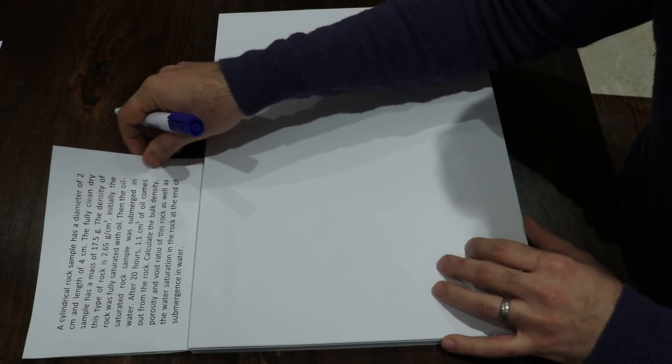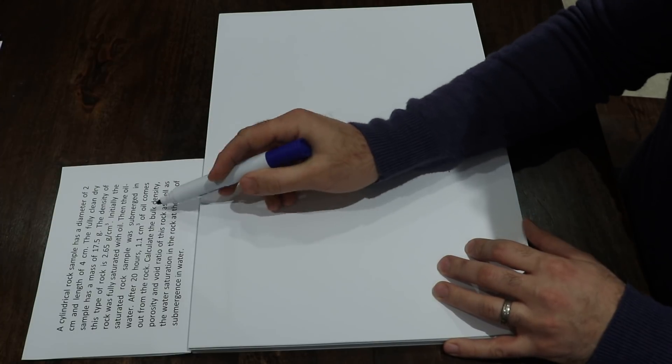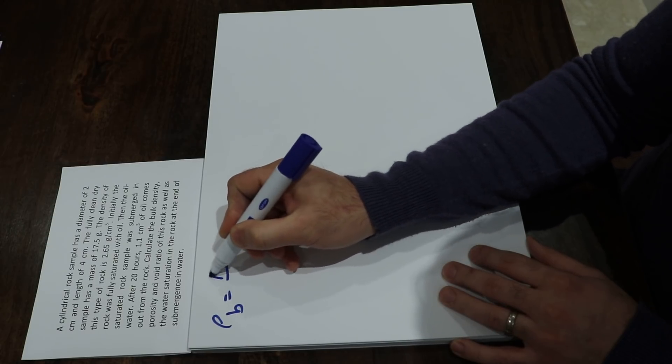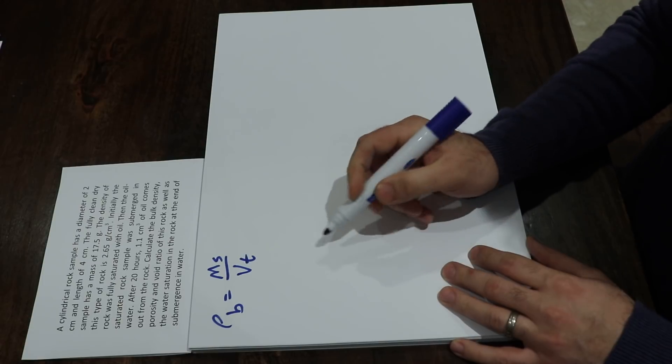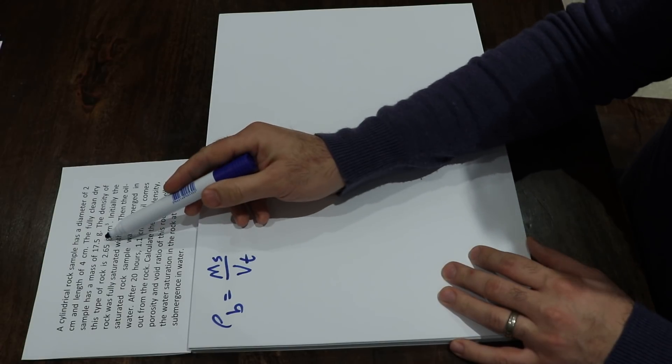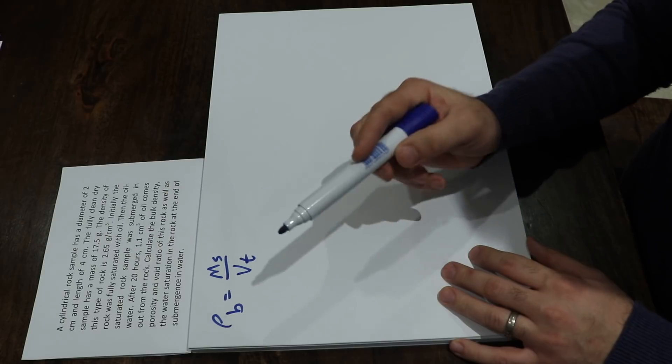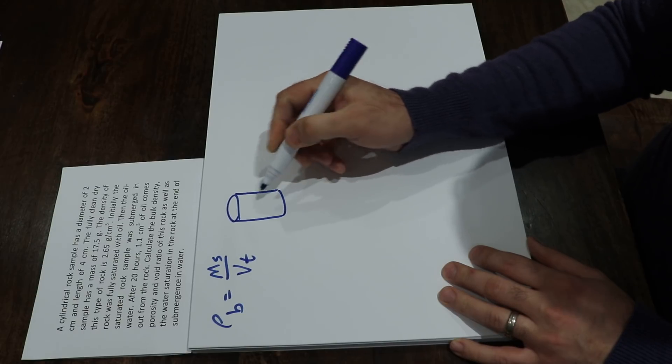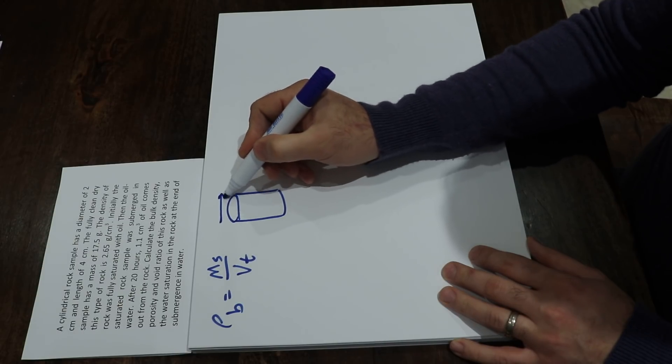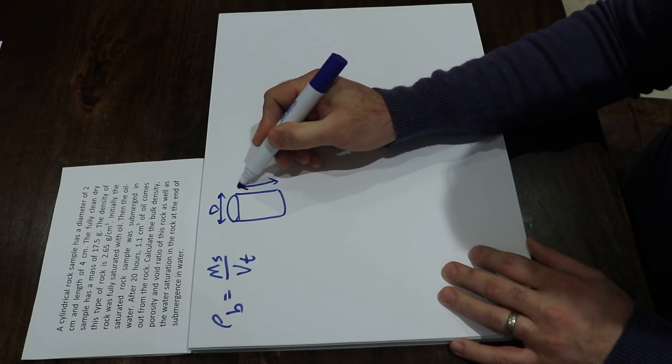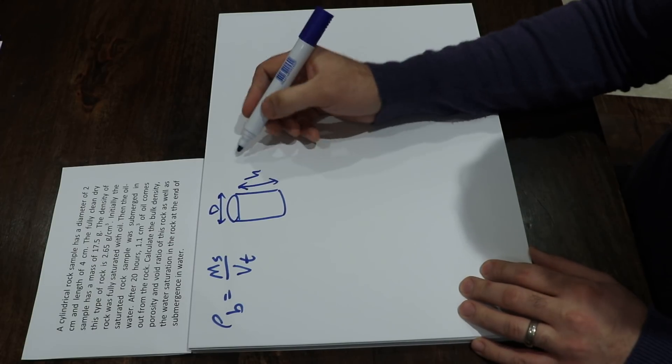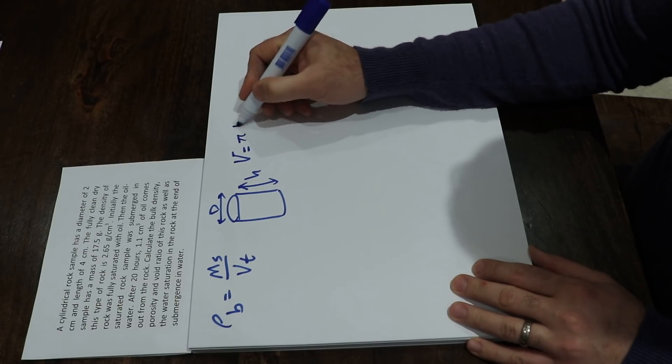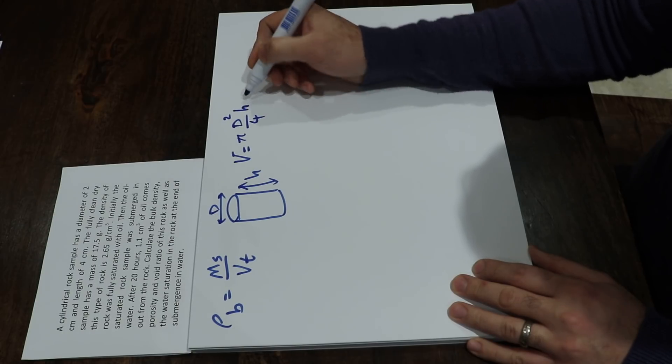Let's calculate first the bulk density. We know that the bulk density is equal to mass of the solid divided by the total volume. Mass of the solid is already given in the question, that is 17.5. And total volume we can calculate because the sample is a cylindrical sample. The diameter is given, d, and the height as well is given.